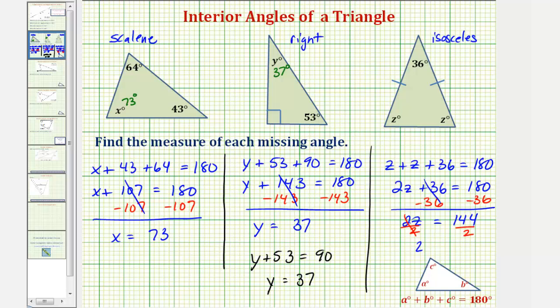So we have z equals one hundred forty-four divided by two equals seventy-two. And therefore, the two missing angles, which are equal in measure, both measure seventy-two degrees. I hope you found this helpful.